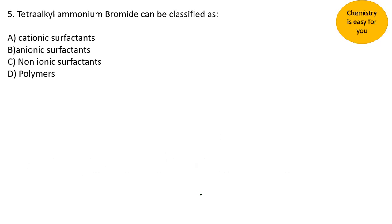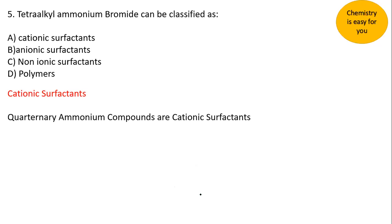The fifth question: tetraalkyl ammonium bromide can be classified as which type of surfactant? It is a cationic surfactant. The key thing to remember is that quaternary ammonium compounds (QAC) are all cationic surfactants. Tetraalkyl ammonium bromide is one such quaternary ammonium compound, so please remember: quaternary ammonium compounds are cationic surfactants.